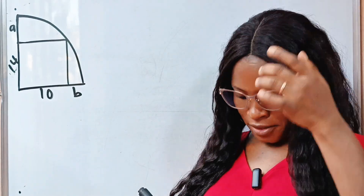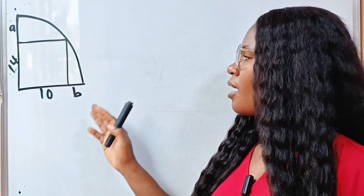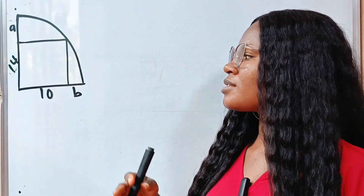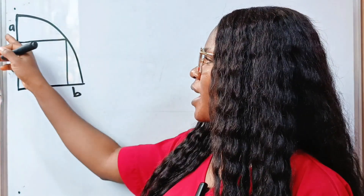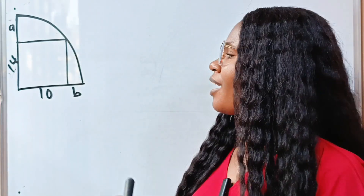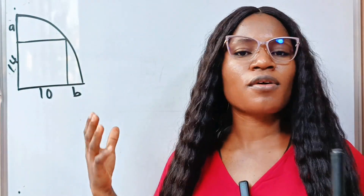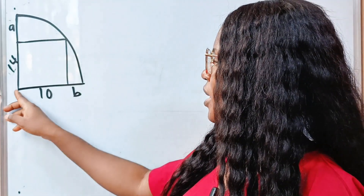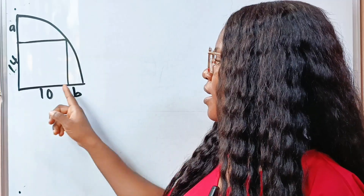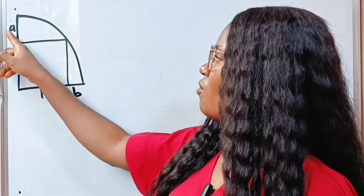Welcome back to my channel. Today we have a very simple geometry question to solve. The question is that we should find the values of A and B. This diagram is not to scale — it is supposed to be a quadrant, one-fourth of a circle. The length from here to here is 14, and the length from here to here is 10. We are asked to find the value of A and B.